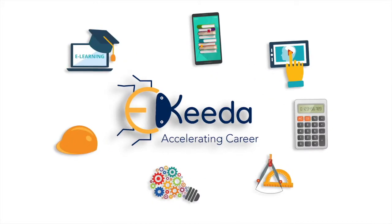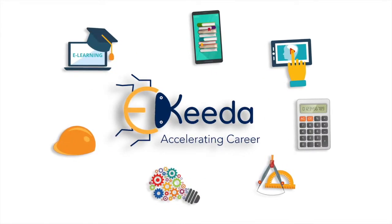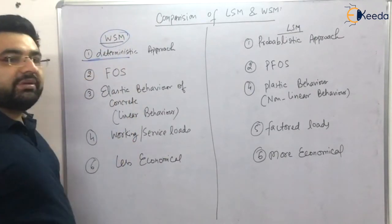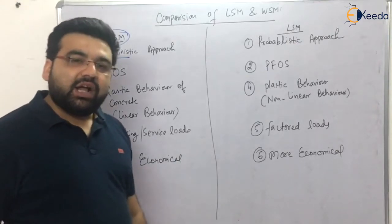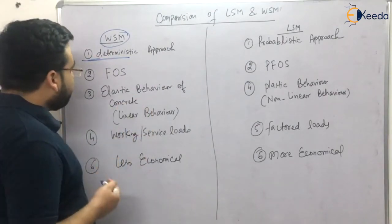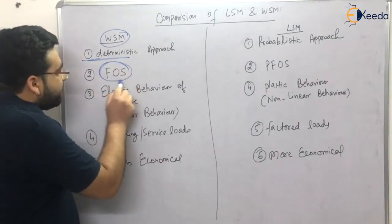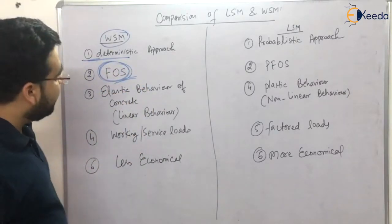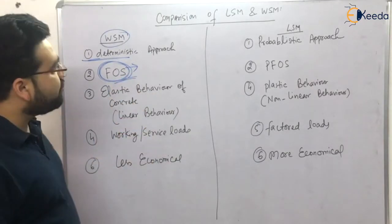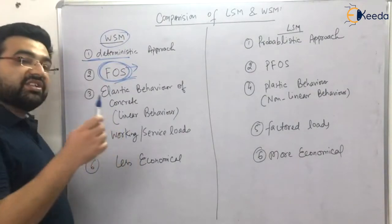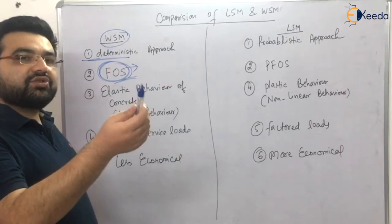First of all, the working stress method is a deterministic approach — why deterministic? Because we actually know the factor of safety. How much is the factor of safety? It is 3 for bending and 4 for compression for concrete. In the working stress method we are dealing with the factor of safety. The factor of safety is the permissible stress divided by the stress acting on that particular structure. The permissible stress is the characteristic stress divided by the factor of safety.